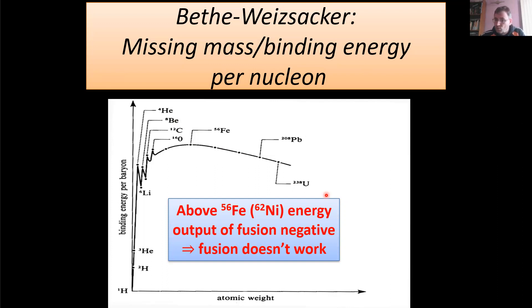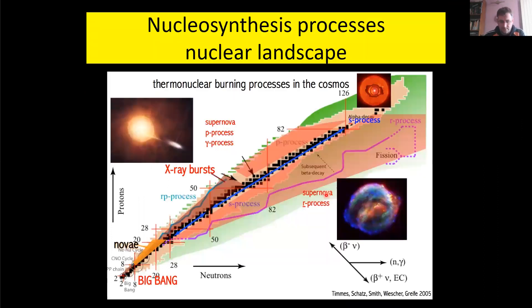So fusion doesn't work anymore, we need other processes. Looking back at the landscape, you see this Kepler supernova. One Nova, wrong side, should be a different one. So this Cassiopeia A would do better.